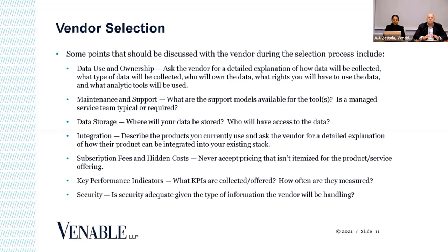Some more specific points to work through, some of which will be detailed in your contract, include data use and ownership. Ask the vendor for a detailed explanation of how the data is going to be collected. What type of data is being collected? Who gets to own the data? What rights will exist? What tools are there to visualize or analyze? Who's managing the data? What kind of security is in place? You'll probably be bringing in a privacy resource for this. Not all the contracts you will see are very clear about data use and ownership. You may need to incorporate an information security or data privacy addendum — many large organizations have this now.